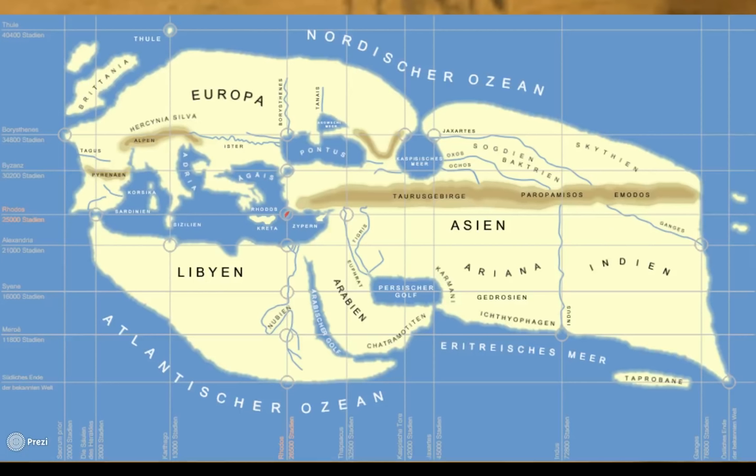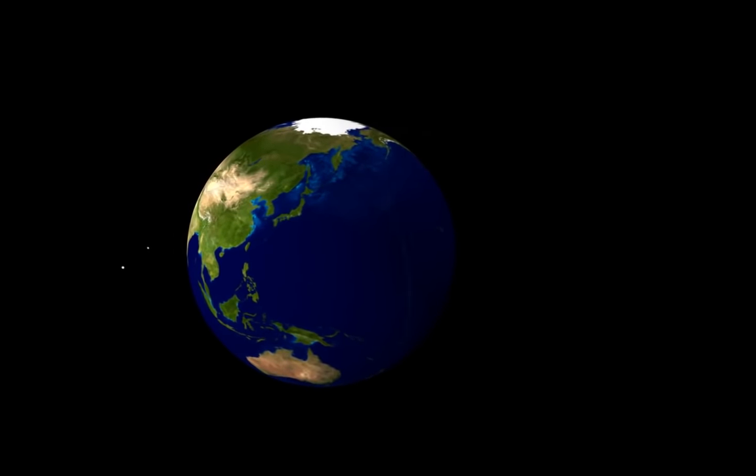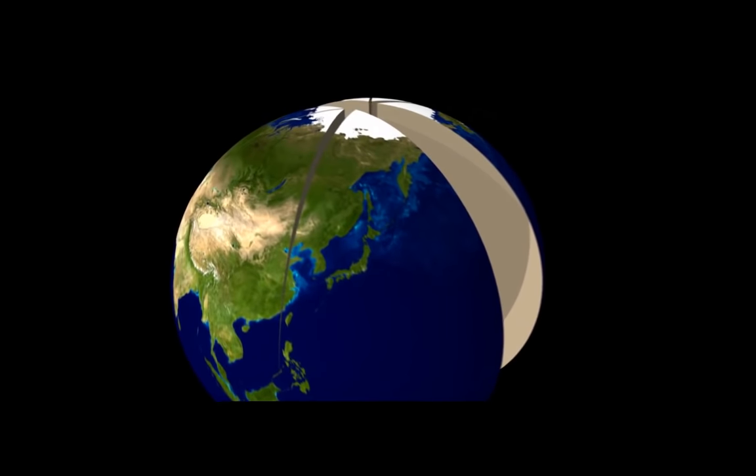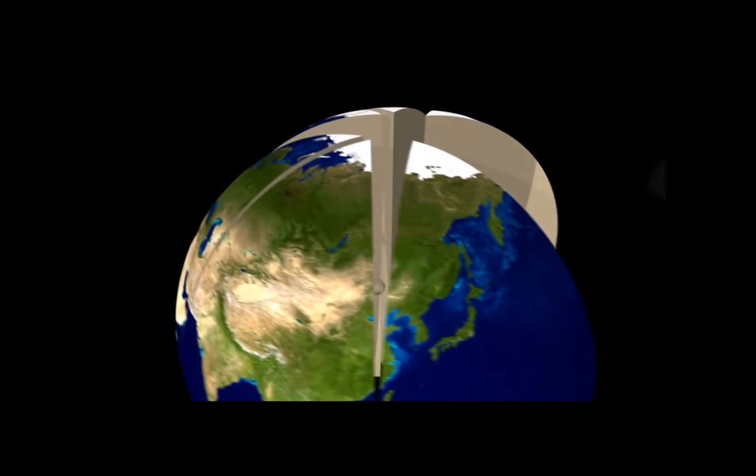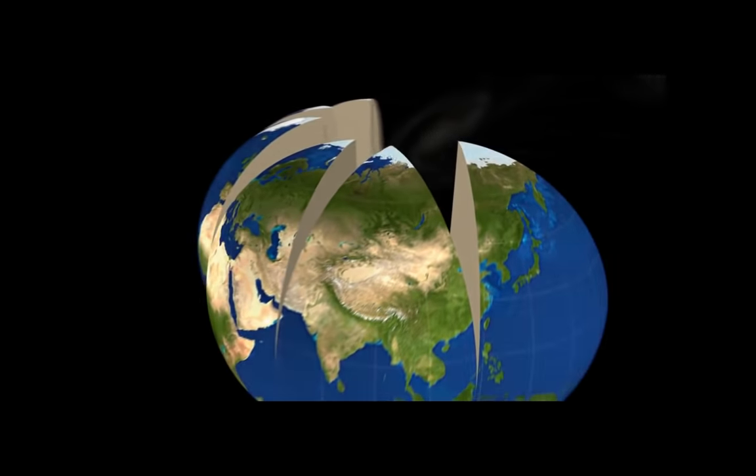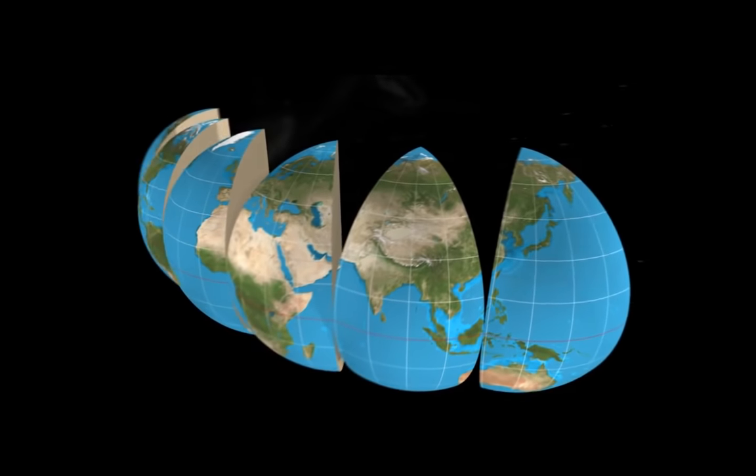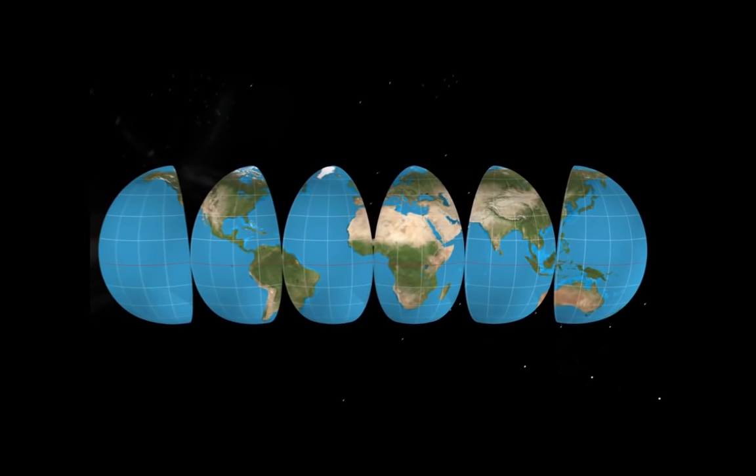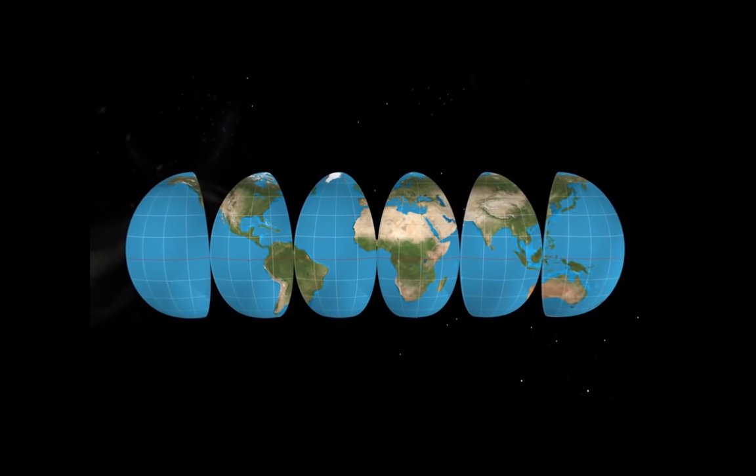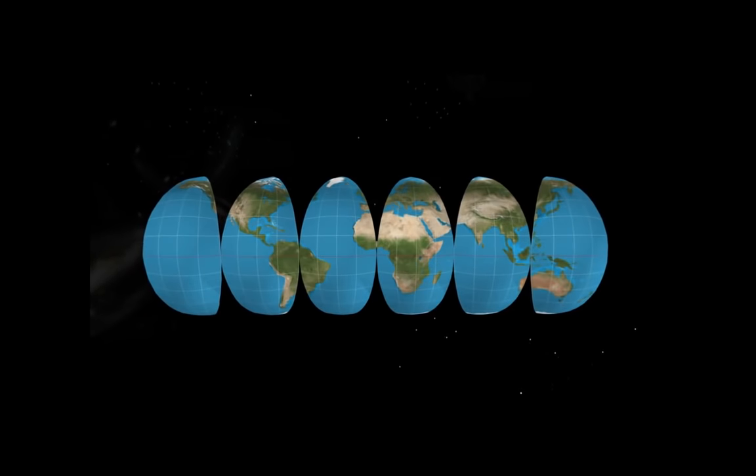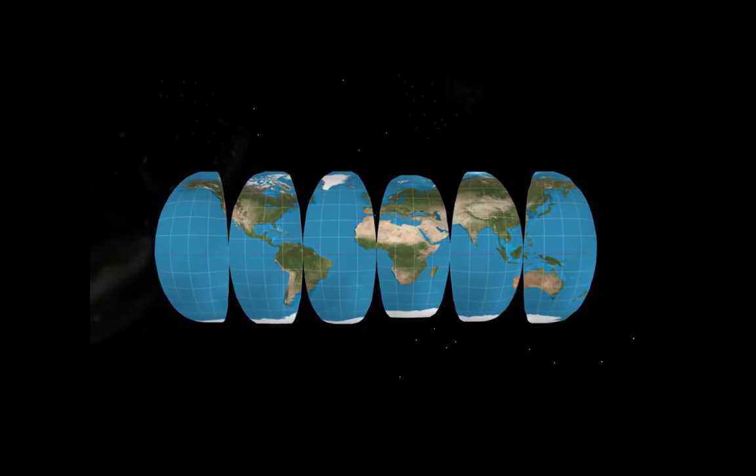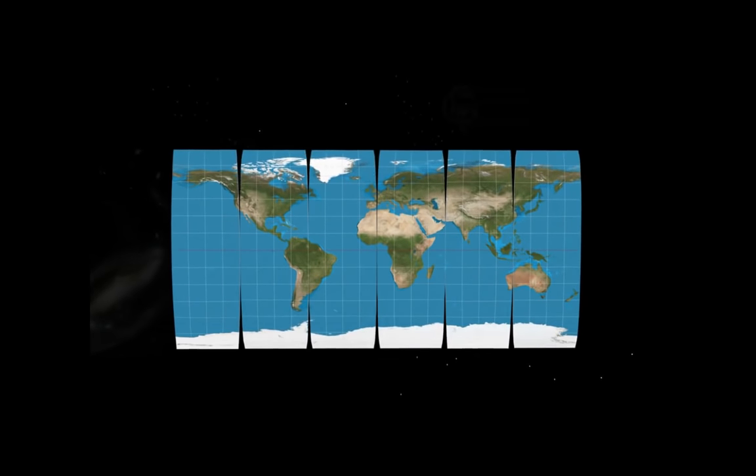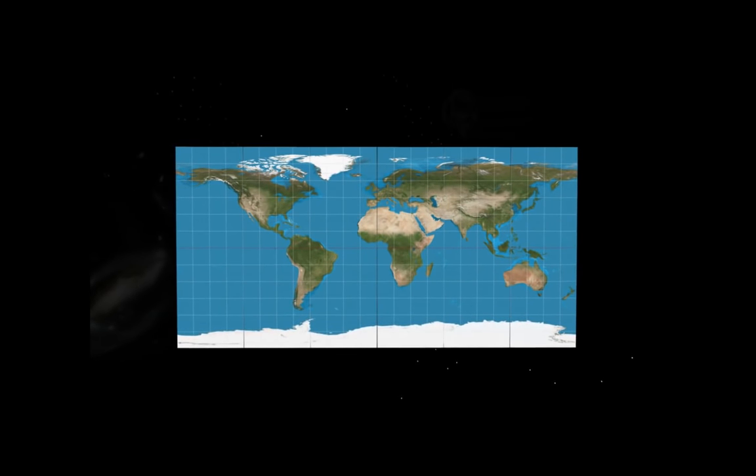Map projections are a way of representing the Earth, which is a three-dimensional object, on a two-dimensional plane. There is no way to do this without distortions, so cartographers have to choose the characteristic that will be shown accurately at the expense of the others. Or perhaps how to present a compromise of several characteristics, things like area, shape, distance. So there really is no one best projection for mapping. There are countless projections out there for different purposes, and none of them are perfect.